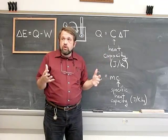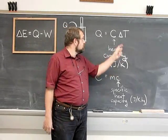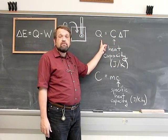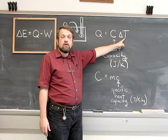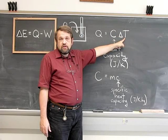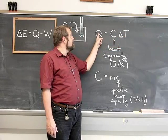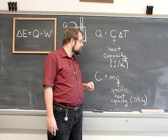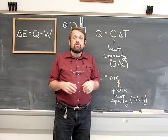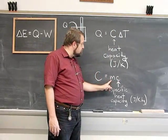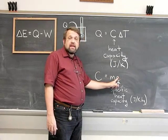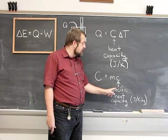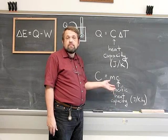Heat capacity is also larger for larger systems — a bigger system will have a larger heat capacity, meaning the same amount of heat added produces a smaller change in temperature. This motivates us to write the heat capacity as the mass of the system times lowercase c, called the specific heat capacity, or specific heat, measured in joules per Kelvin per kilogram.